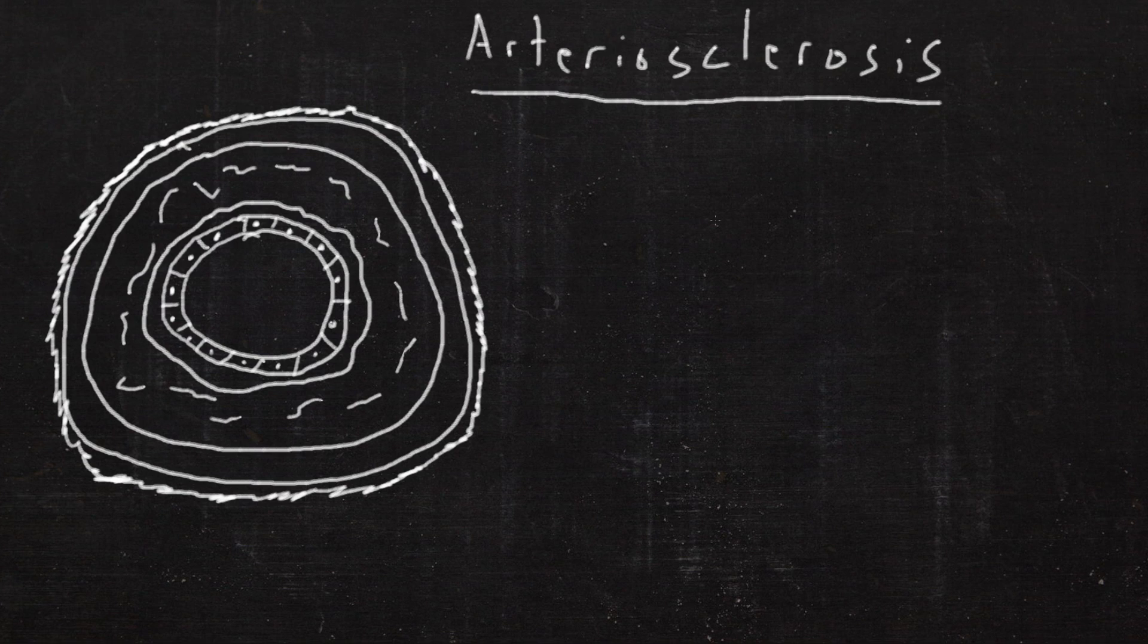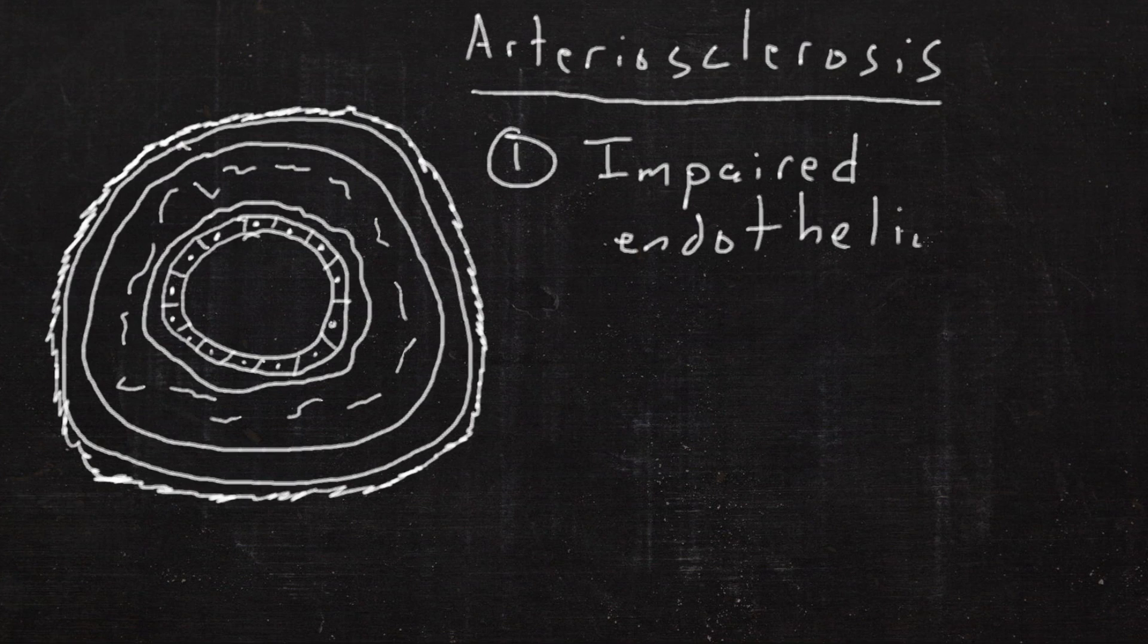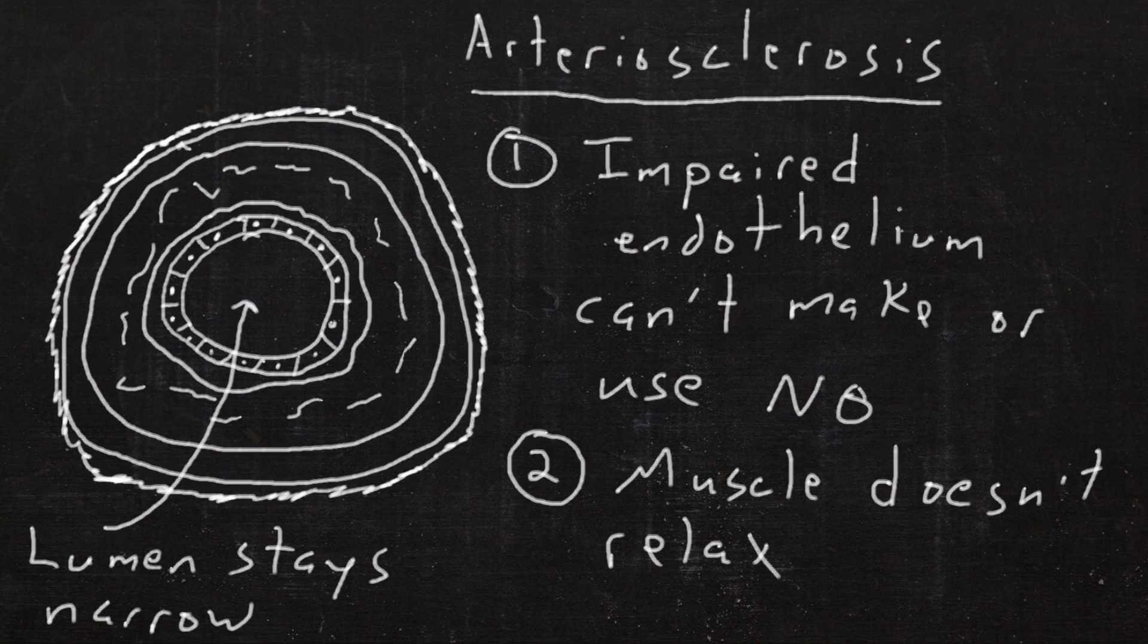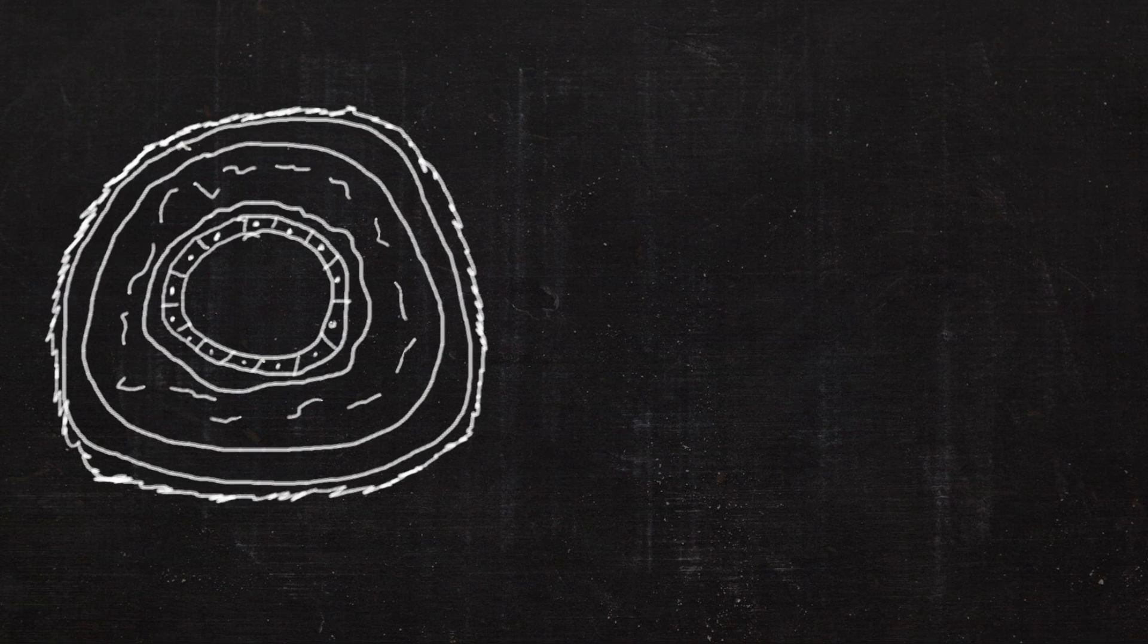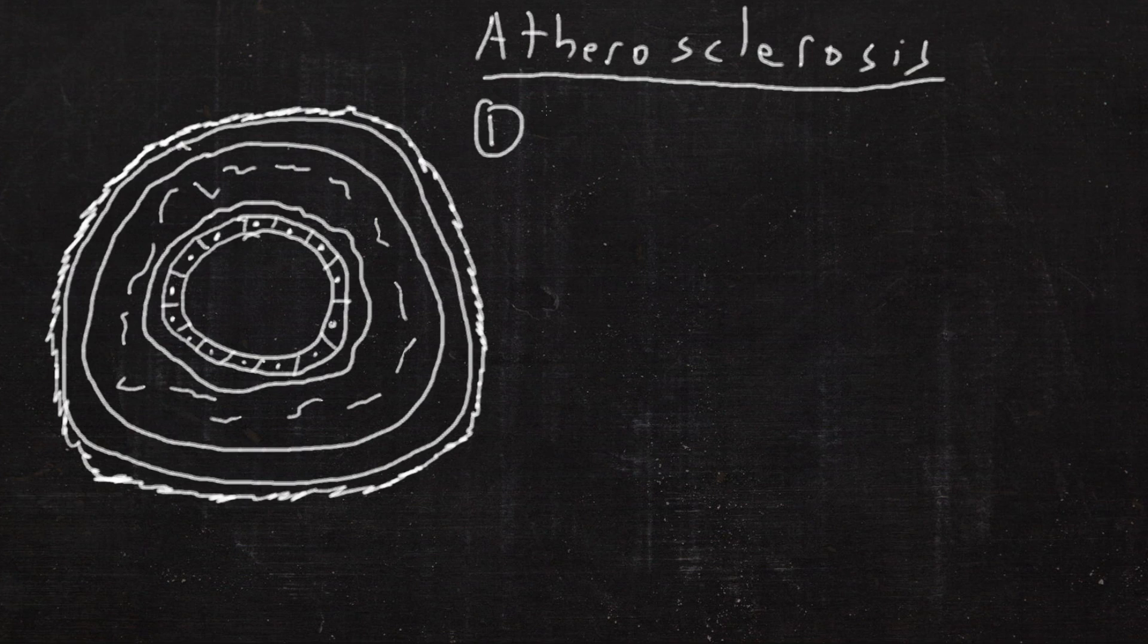First, arteriosclerosis is from an impaired endothelium which can't make or use nitric oxide properly, so the muscle doesn't relax and the lumen stays narrow when blood is needed, leading to ischemia or insufficient blood supply.